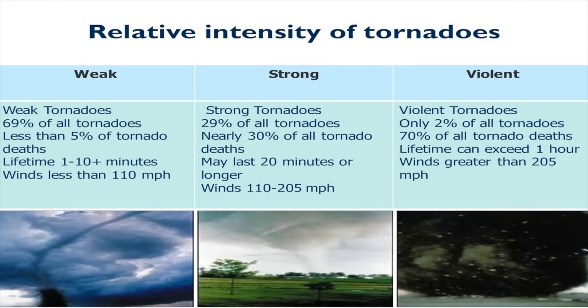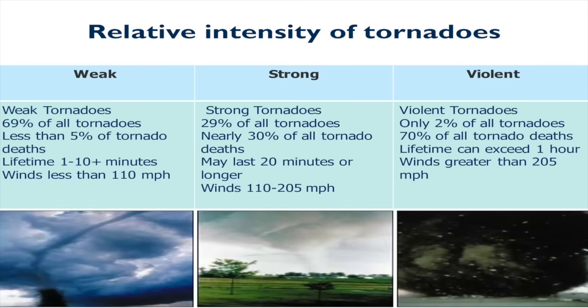Strong tornadoes comprise about 29% of tornadoes, and nearly 30% of all tornado deaths are in this category. They stay on the ground longer, may last up to about 20 minutes or even longer, and their wind speeds range from 110 to about 205 miles per hour. In this category, we start having tornado wind speeds that can exceed those of hurricanes.